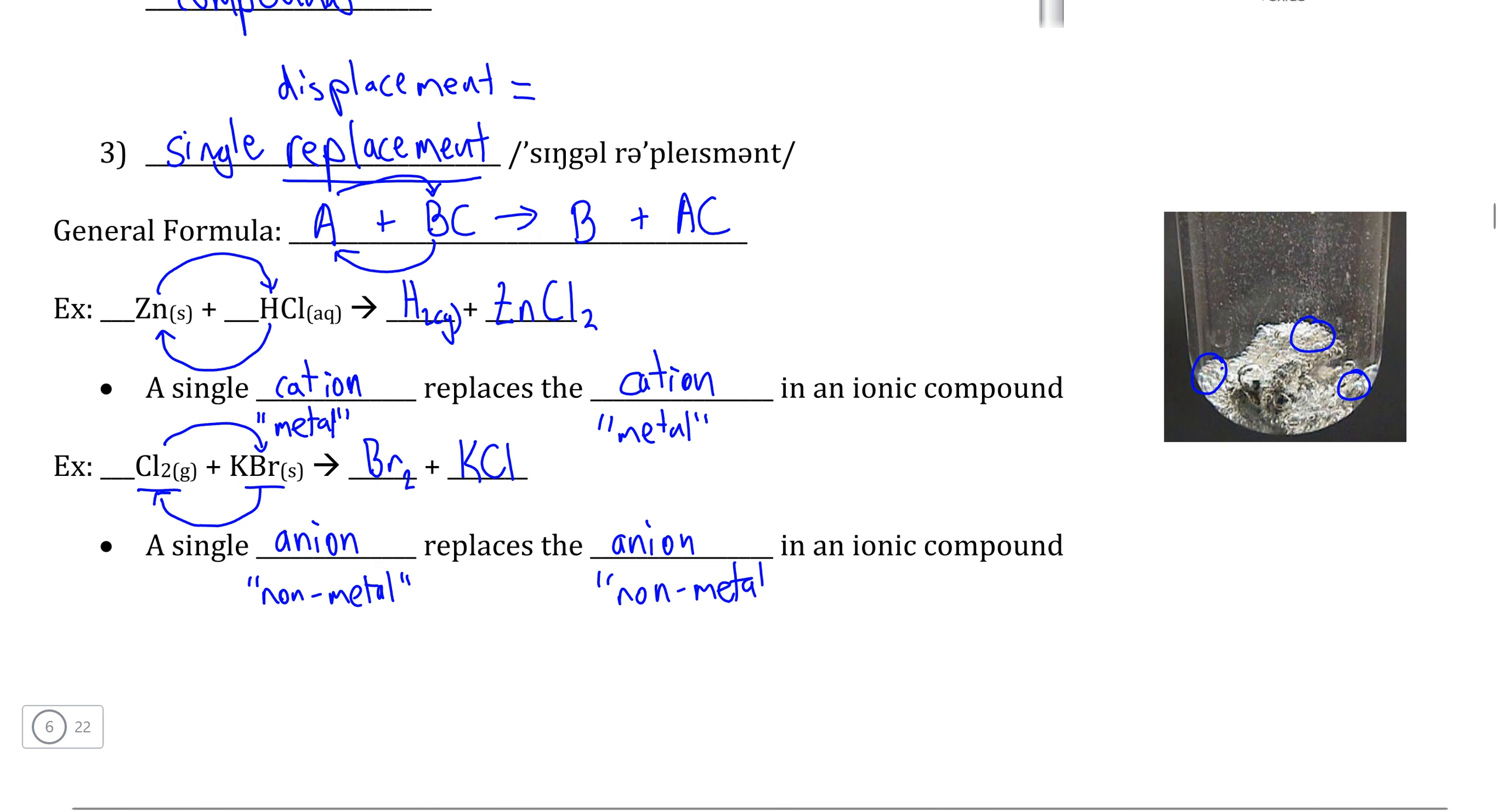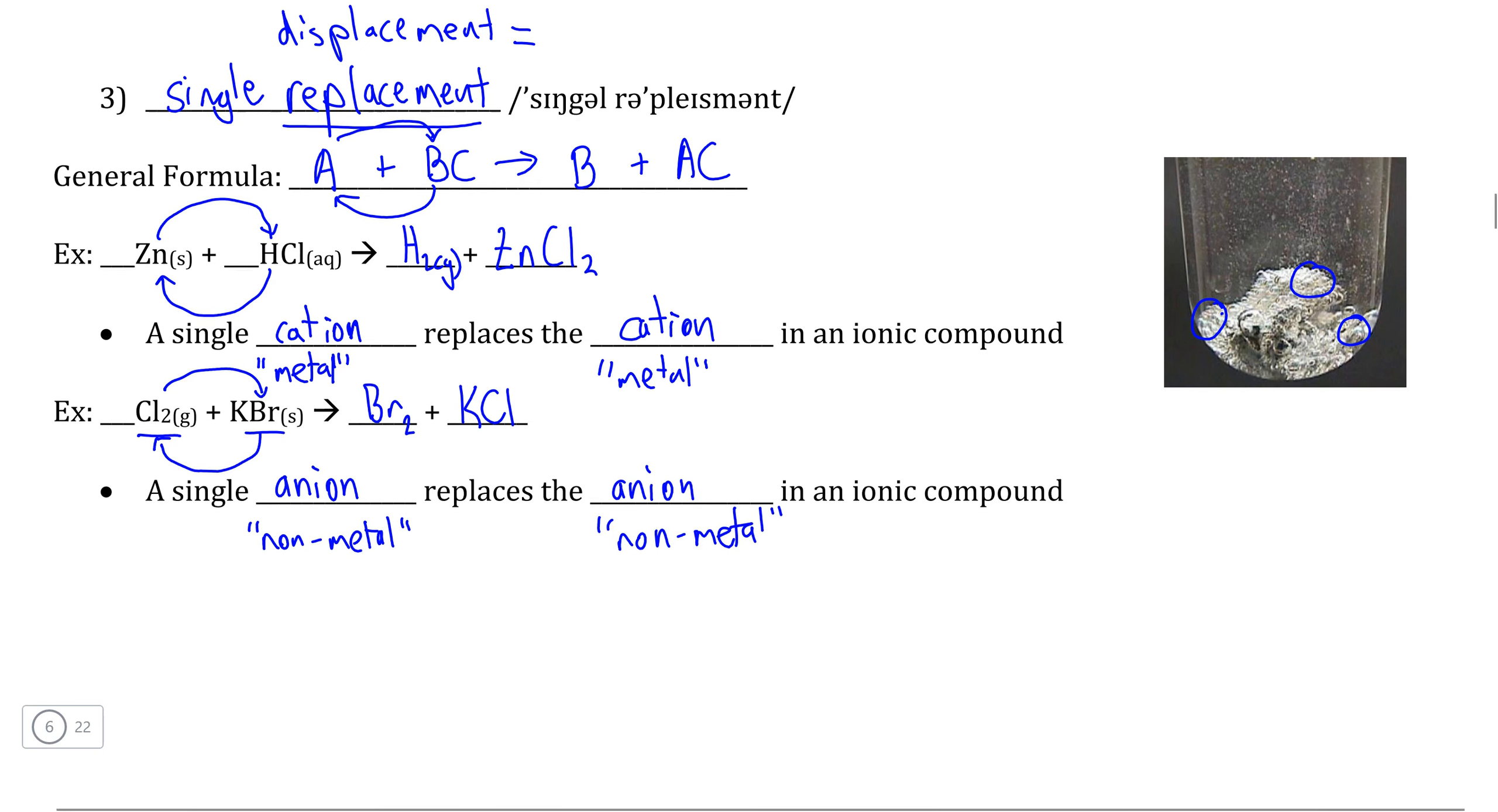And therefore, we can write a modified form of the general formula that we see. So if we represent chlorine as A and potassium bromide as BC, this time A and C are replacing one another so that we would then have C, element C in this case bromine, by itself.